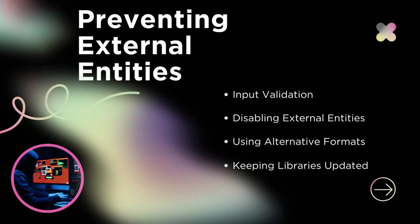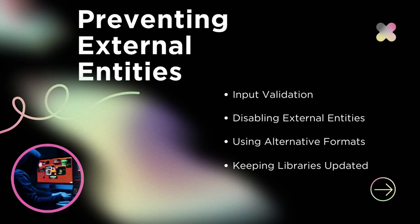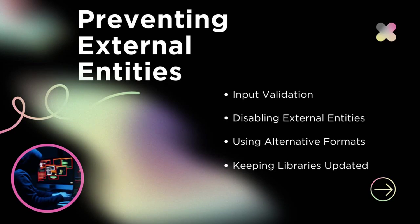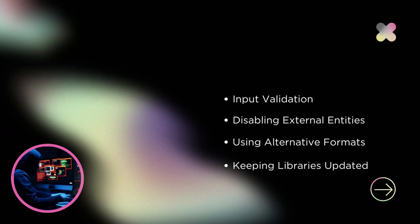Now we will see how we can prevent those attacks. To mitigate XXE attacks, it is crucial to employ preventive measures. First, input validation — validate and sanitize user-provided XML input to remove potential XXE references. Then, disabling external entities — always turn off the processing of external entities if they are not needed. Next, using alternative formats — whenever possible, consider using safer data formats like JSON. And finally, keeping libraries updated — regularly update XML parsers and libraries to patch known vulnerabilities.